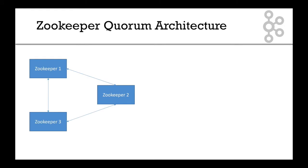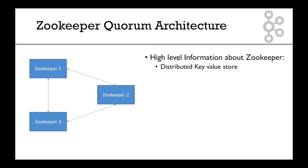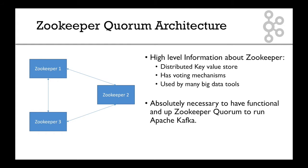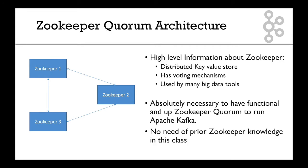ZooKeeper has a Quorum architecture, and that's like three ZooKeeper servers that we're going to set up in this class. Basically, I'm going to give you some high-level information about ZooKeeper. It's a distributed key-value store, it has some kind of voting mechanism, and it's used by many big data tools in the Hadoop ecosystem. It's absolutely necessary to have a functional and up-and-running ZooKeeper Quorum to run Apache Kafka, and that's why we'll spend two hours setting up ZooKeeper correctly. You don't need to know anything about ZooKeeper — we'll acquire all the knowledge as we go along.